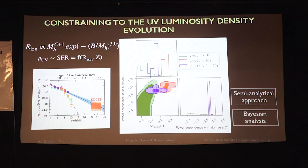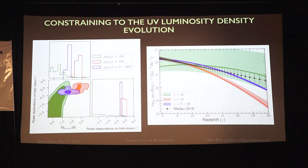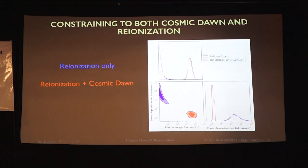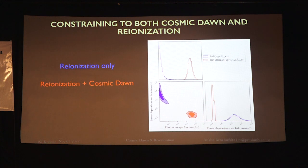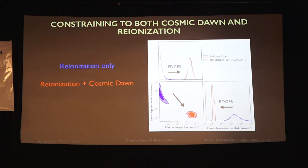We performed a Bayesian MCMC analysis. With the inferred parameters, we plotted the UV luminosity against the Madau extrapolated data, finding that all models are within the one-sigma level. When we consider only reionization and post-reionization measurements, we get the blue distribution. When we additionally include the UV luminosity inferred from EDGES — the Cosmic Dawn measurement — there is a diagonal shift in the contour, validating that high-redshift measurements require a large contribution from faint galaxies, and ionizing photons need to escape at a much higher rate.